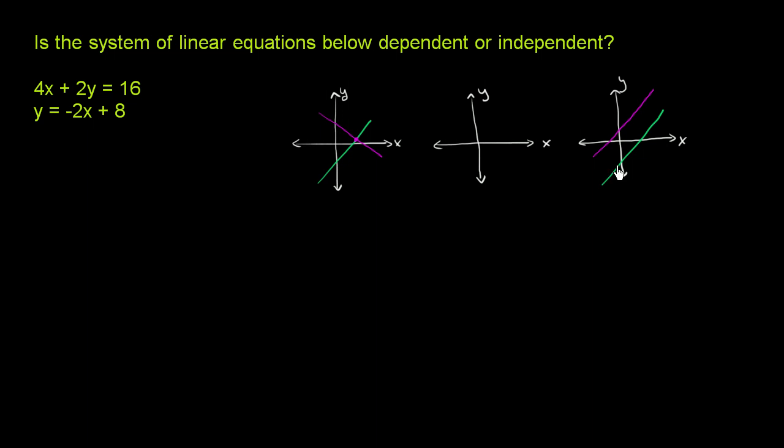And you have no points of intersection. And then you could have the situation where they're actually the same line. So both lines have the same slope and the same y-intercept. So really, they are the same line. They intersect on an infinite number of points. Every point on either of those lines is also a point on the other line.